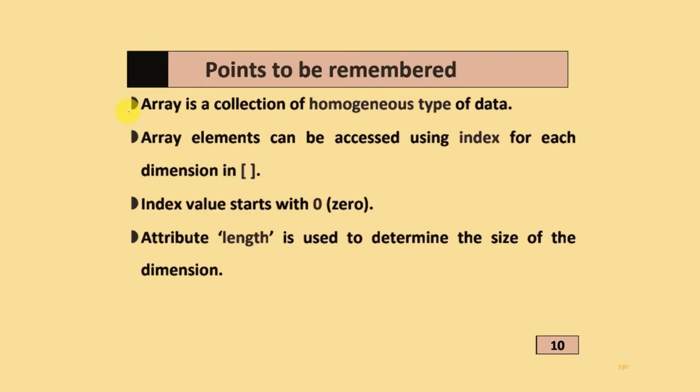Points to be remembered: Array is a collection of homogeneous type of data. Array elements can be accessed using index for each dimension in square brackets. Index value starts with zero, and attribute 'length' is used to determine the size of the dimension.